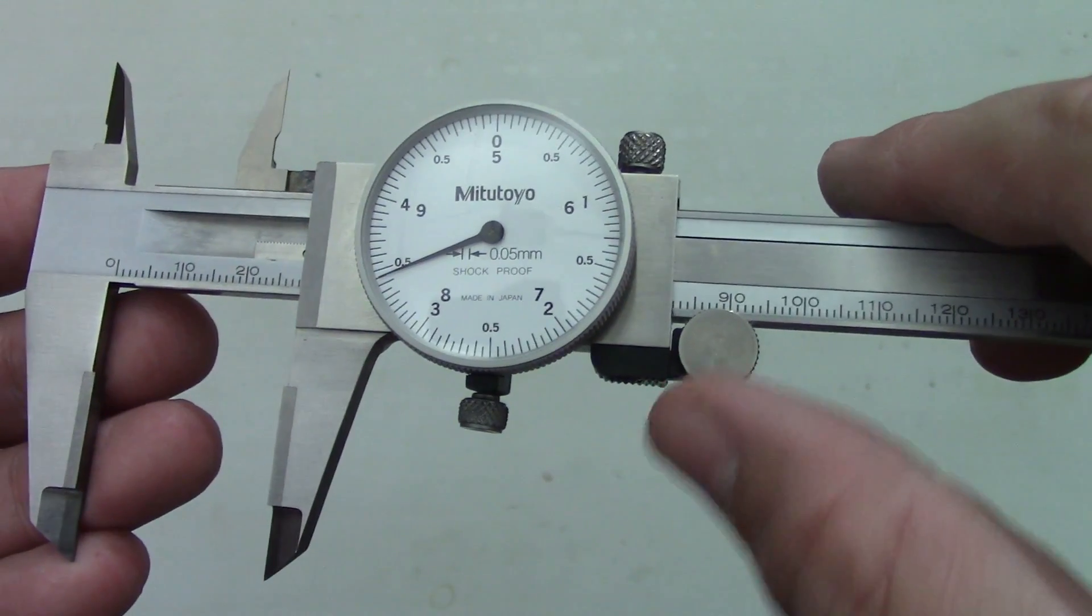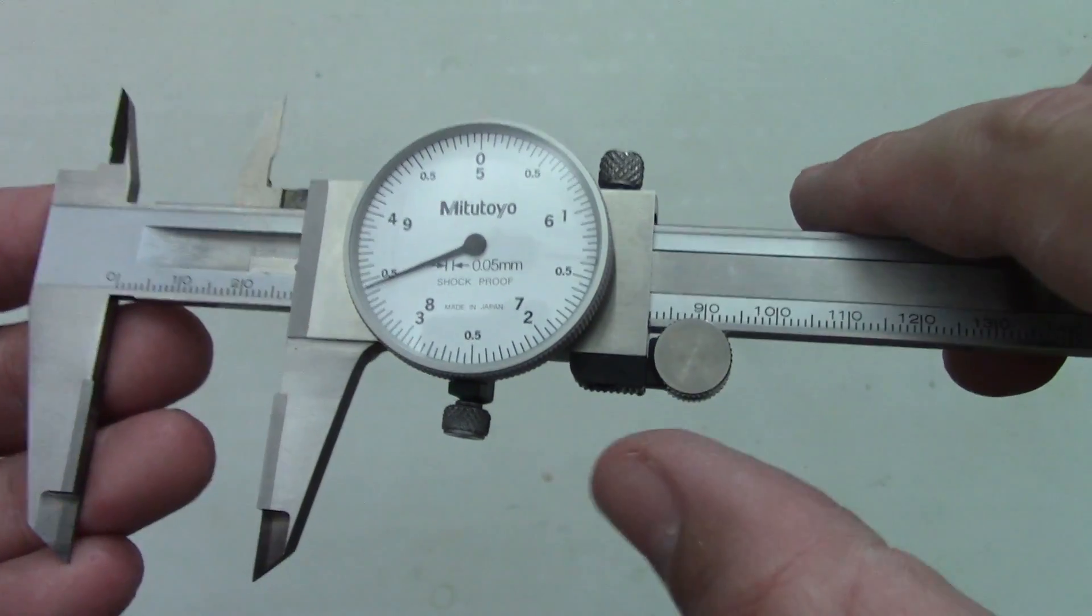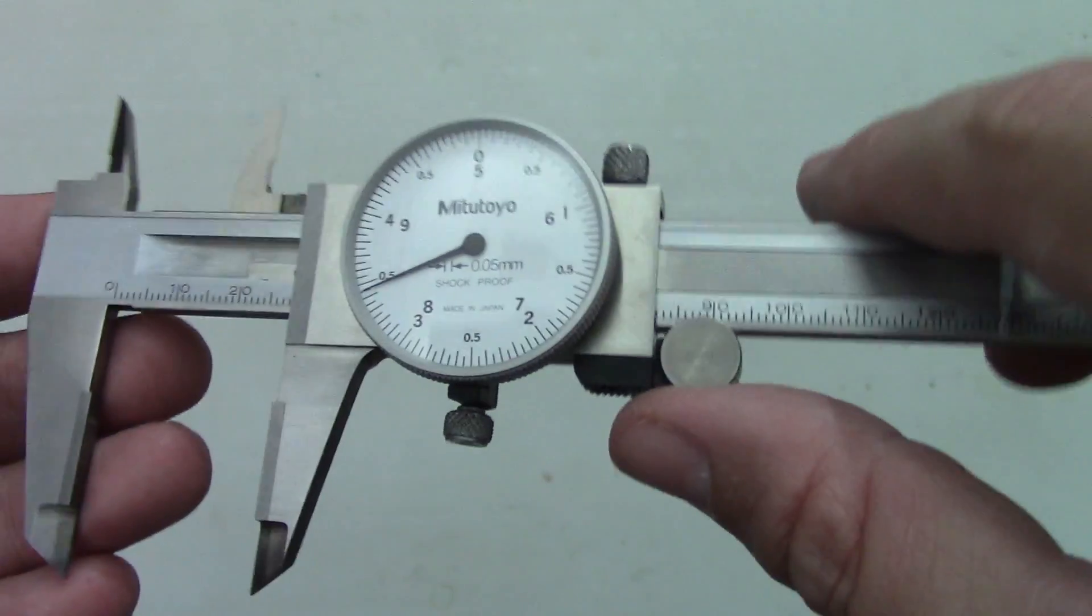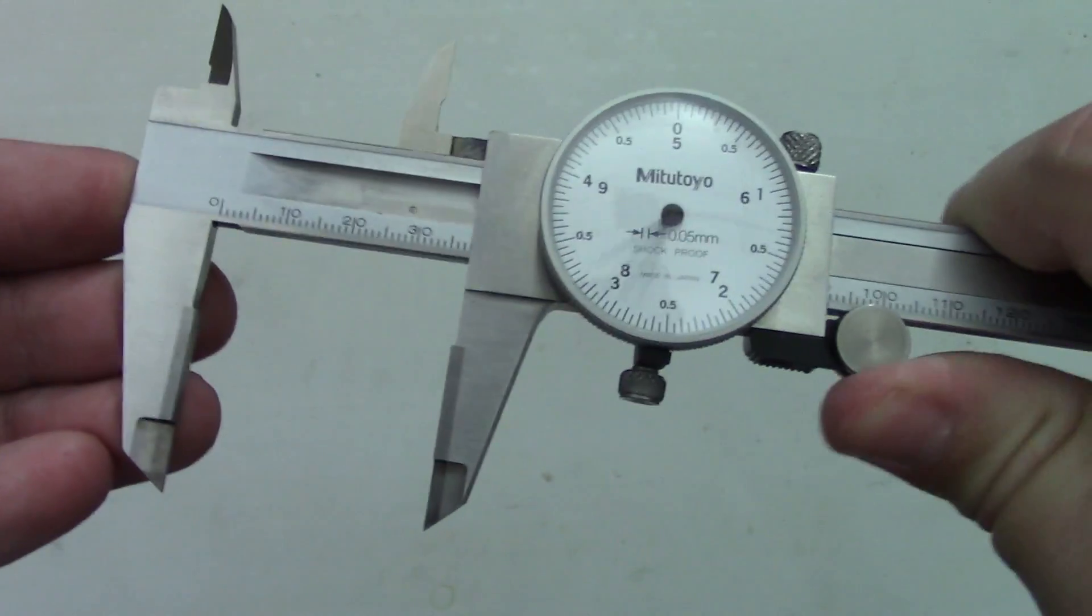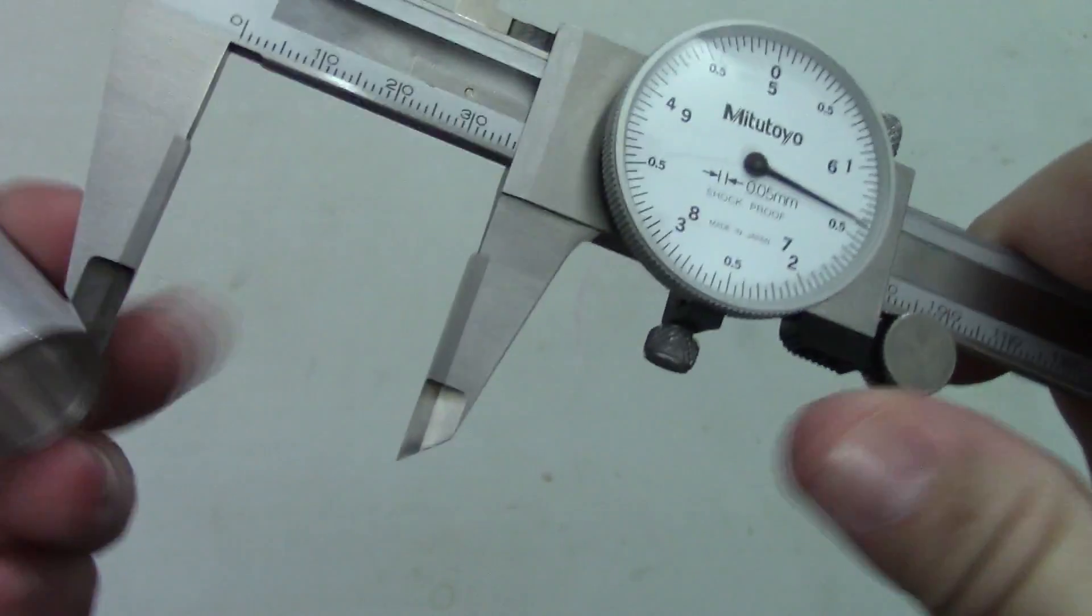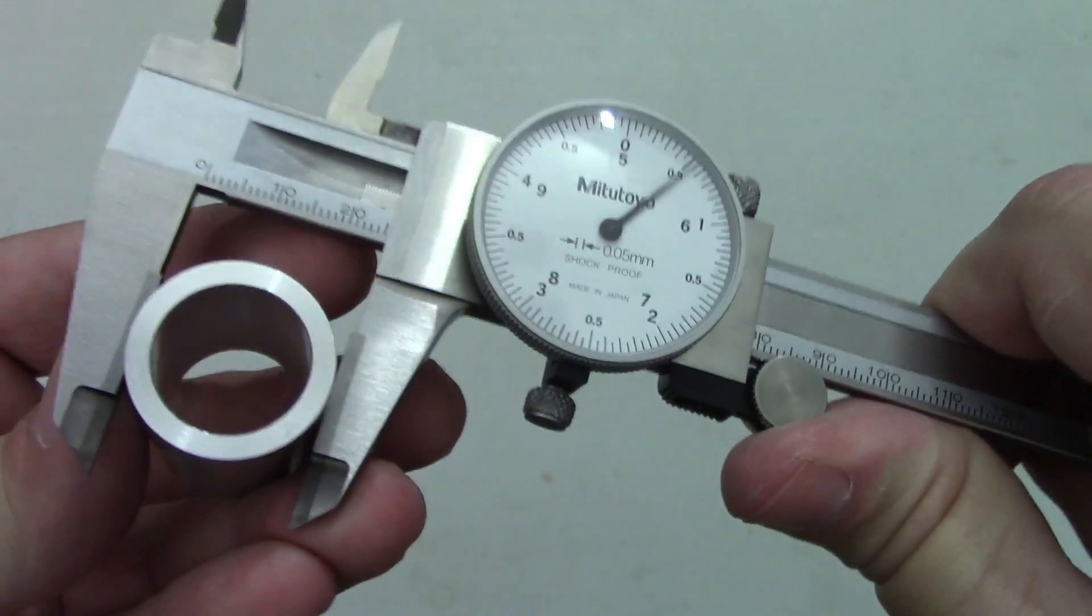Speaking of proper technique, let's address some good practices to follow when measuring with calipers. First of all, I pointed out this thumb wheel at the beginning of the video, and that's what I call the wheel of inaccuracy. This is here to help you open and close the calipers quickly, but I often see people using it to actually measure parts.